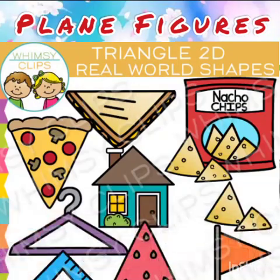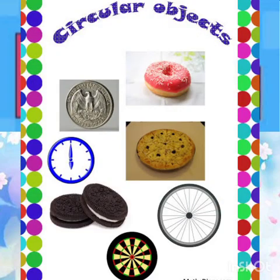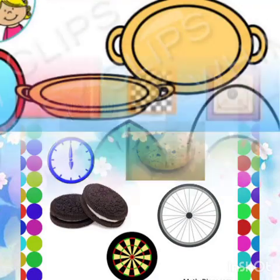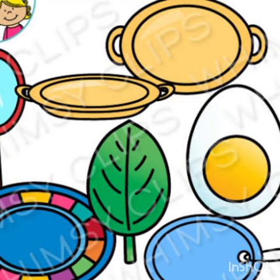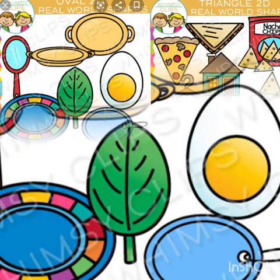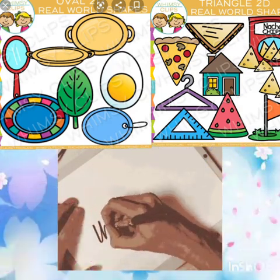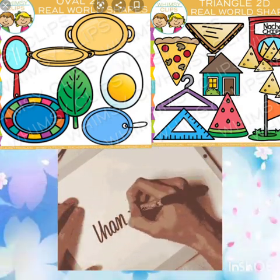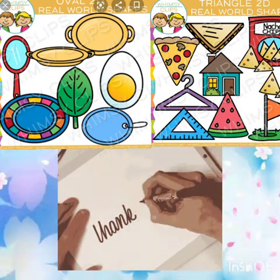So now children, find out some more objects which are triangular, circular, or oval in shape. Thank you children — see you in the next class.